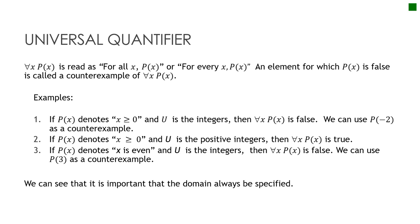The universal quantifier — for all x, p of x — means for every x in the domain, whatever the domain is specified to be, p of x is true. If we find an element in the domain for which p of x is false, we call that a counterexample, and we say that 'for all x, p of x' is not true by counterexample.